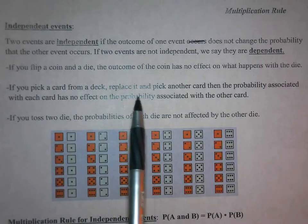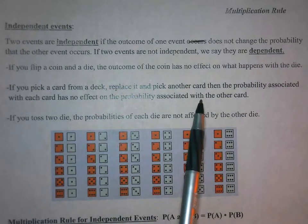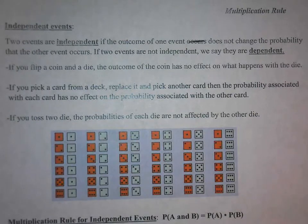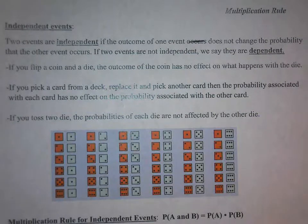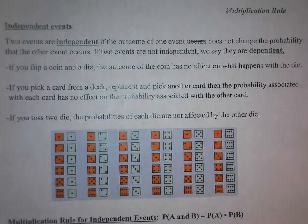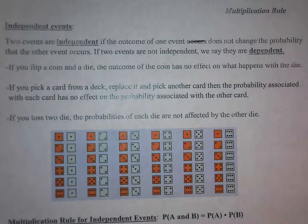If you pick a card from a deck, replace it, then pick another card, the probability associated with each card has no effect on the probability associated with the other card. So if you chose one card — let's say the ace of hearts — and you replace it then randomly choose another card, you could choose the ace of hearts again. There are 52 cards to choose from on the first pick, and still 52 cards on the second pick, so the probability was not changed.